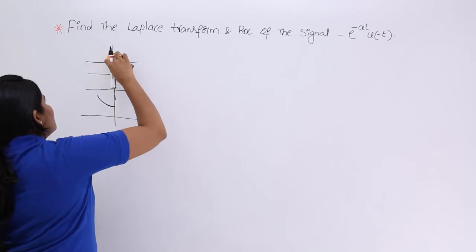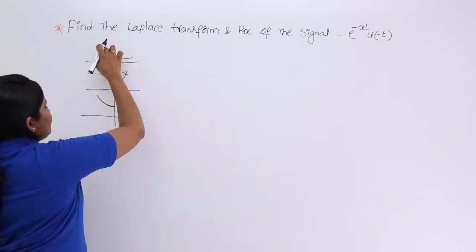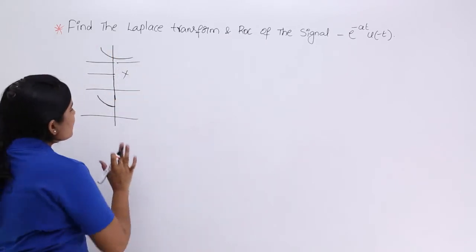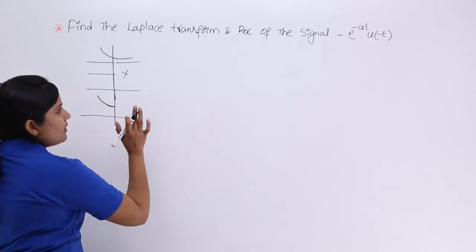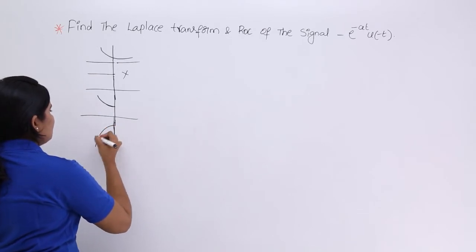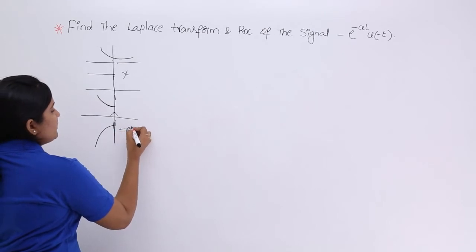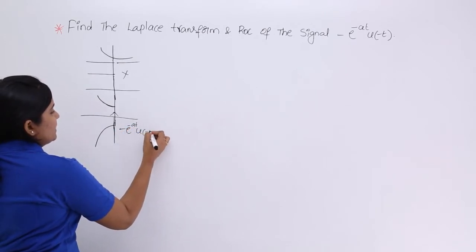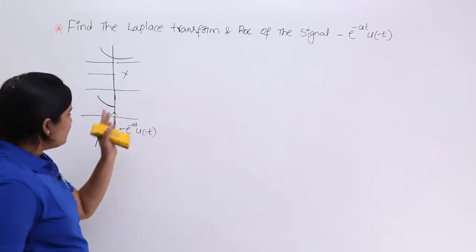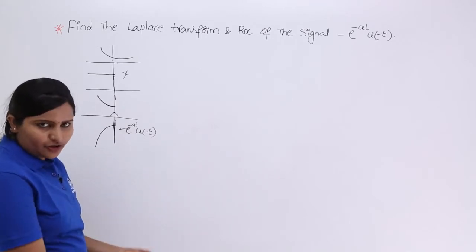The decaying exponential signal is multiplied with u of minus t, and where u of minus t is zero, zero into anything gives zero. The resultant signal has a minus sign, meaning it appears on the negative y-axis. This is nothing but minus e power minus at, u of minus t — the minus is not in time, it means the total signal is flipped to the negative side.